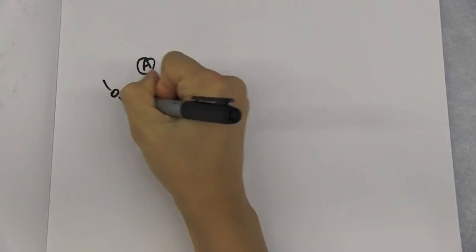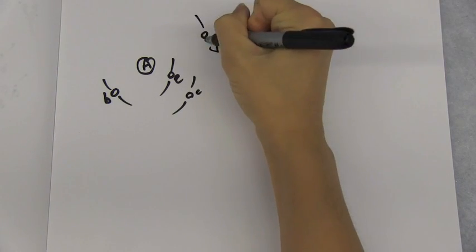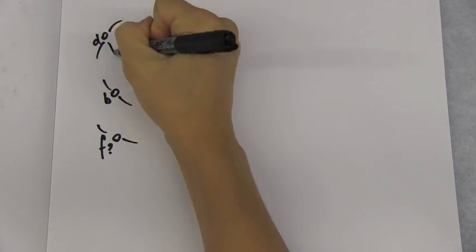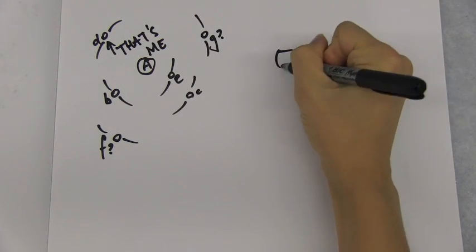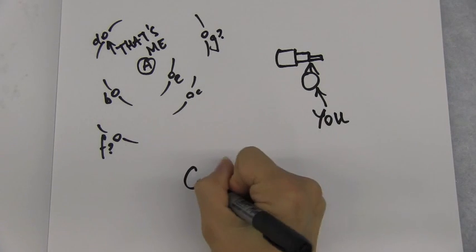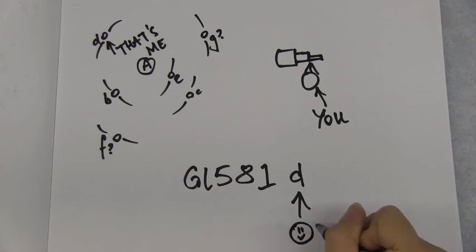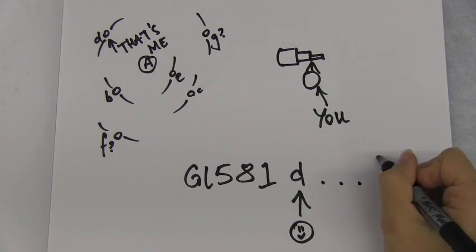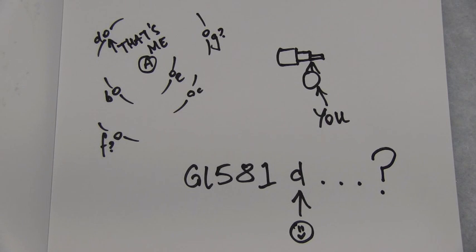Now I'm a simple exoplanet round Gliese 581, watched keenly and closely by beings going round the sun. I'm happy with my status, an anonymous lurker. But now you think that you could name me something better.